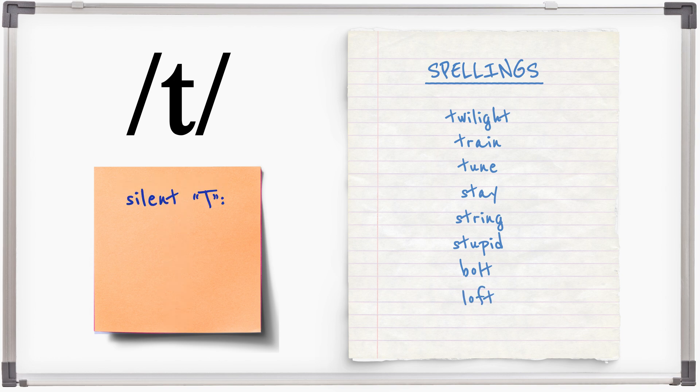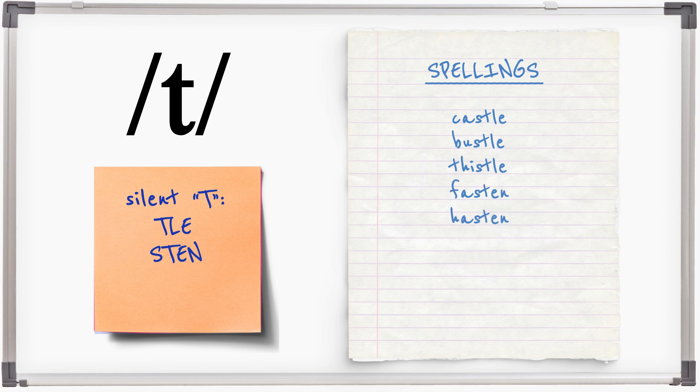T is silent in words ending TLE: castle, bustle, thistle. In words ending S-T-E-N: fasten, hasten, listen. And in some imported French words such as ballet and chalet. The word often can be pronounced with silent T, often.